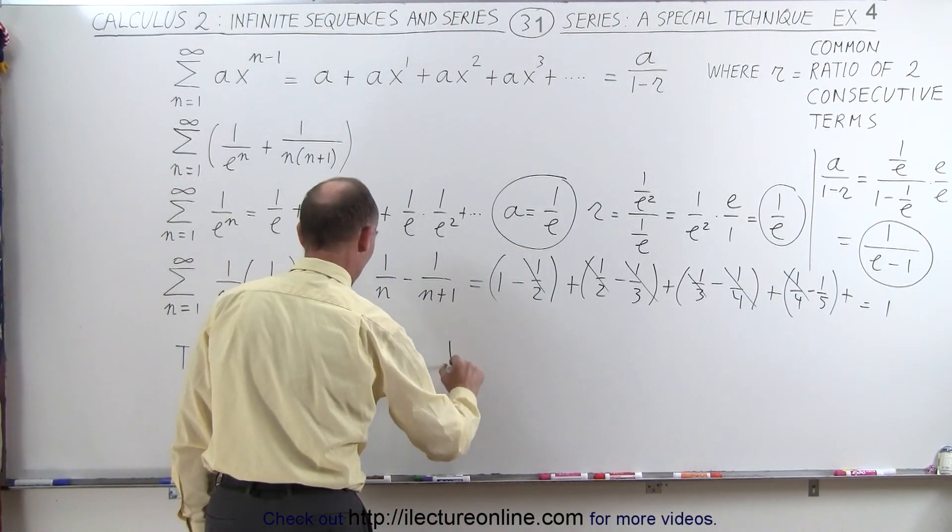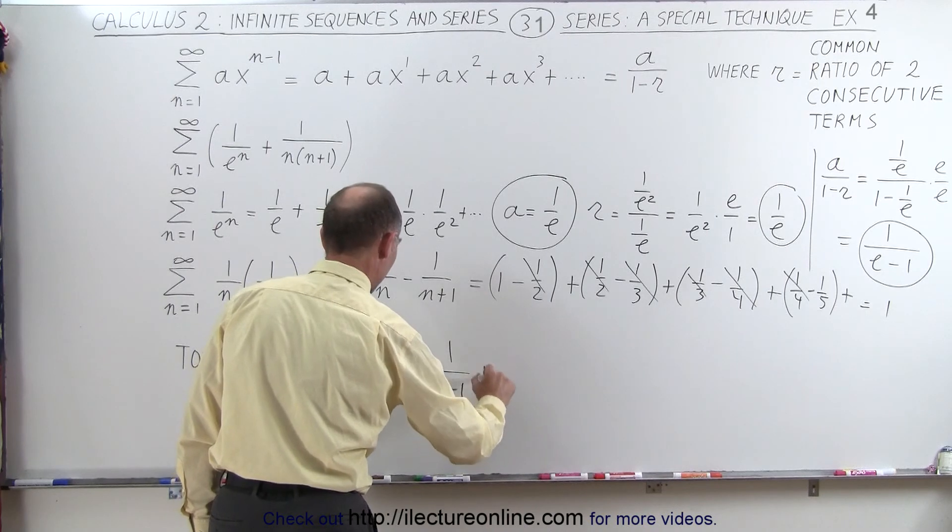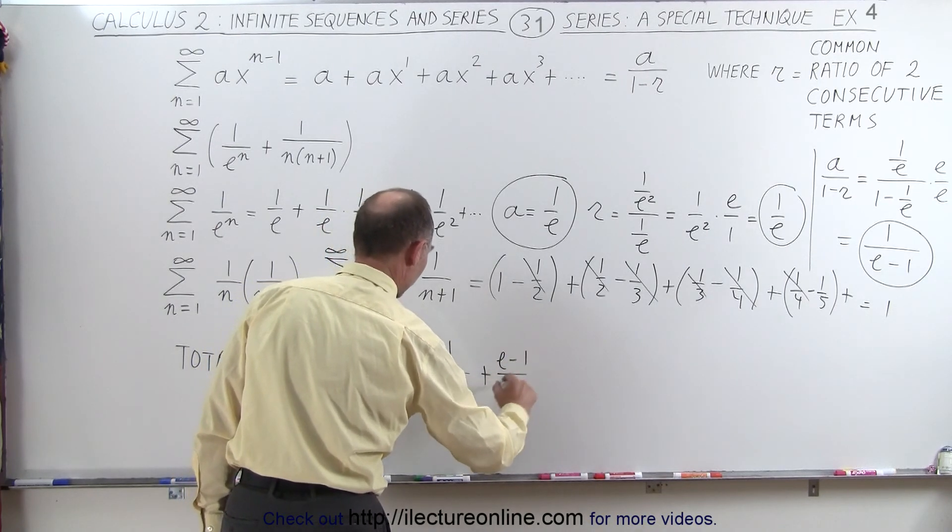This is equal to 1 over e minus 1 plus e minus 1 over e minus 1.